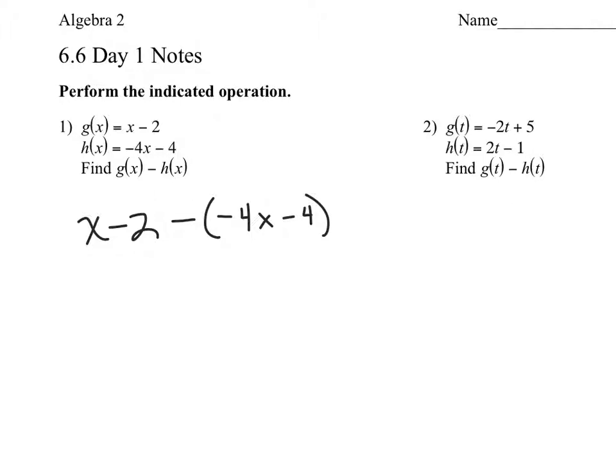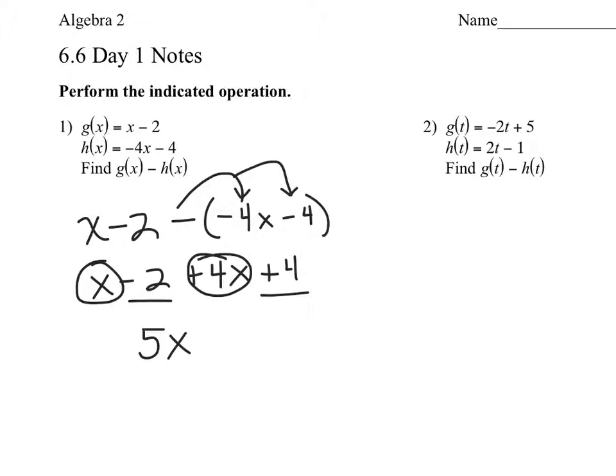So now, when I do this, again with subtraction, I've got to distribute the negative. So now this becomes x minus 2 plus 4x and plus 4, and now it's all about combining like terms. These guys are like terms. Positive 4x and 1x is 5x's. And then negative 2 and positive 4 is positive 2. And you are done. So when we combine those with subtraction, if we subtract the two functions, we end up with 5x plus 2. I can't do anything else with those guys. I can't combine them because they're not like terms.